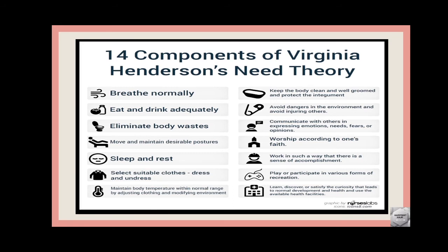Aage hai: play or participate in various forms of recreation. Ye bhi ek need hai — ki woh ja ke participate kar sakta hai various forms of recreation mein — yani ki jo bhi uska dil chahe koi activity karne ke liye: dance, embroidery, ya kuch artistic kaam karne mein — woh easily participate kar sakta hai without having any health issue.